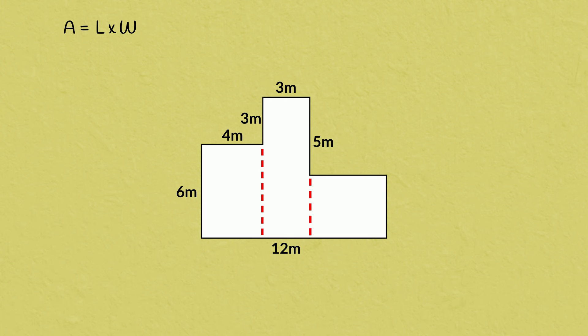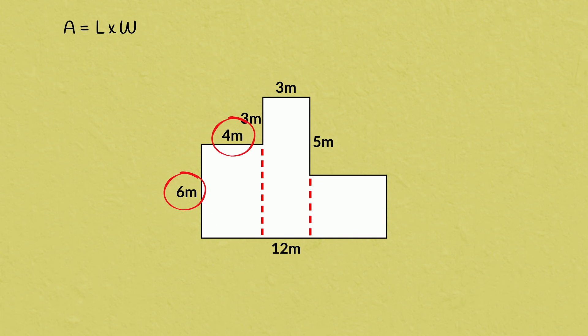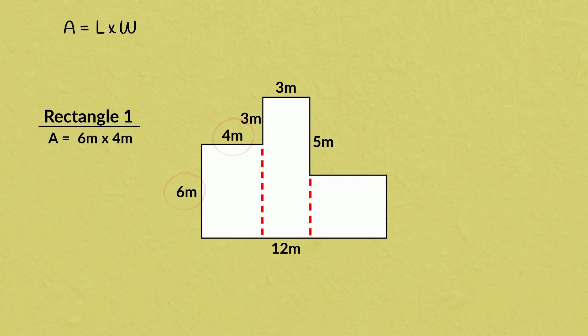I'll need to work out the length and width of each rectangle. Some measurements are already there; for others I'll have to use reasoning skills to work them out. I'll start with this rectangle because I already have the length — 6 meters — and the width — 4 meters. 6 times 4 equals 24. The area of this rectangle is 24 meters squared.